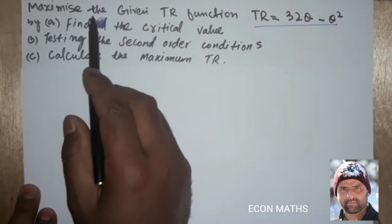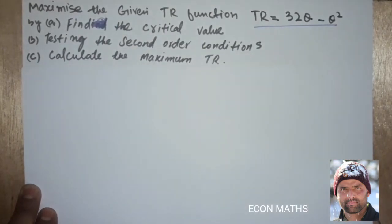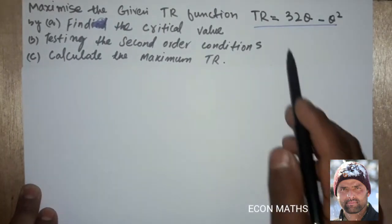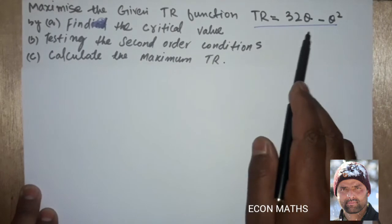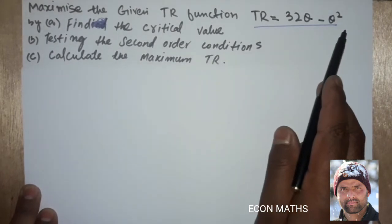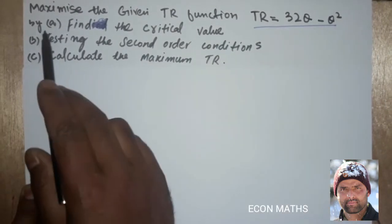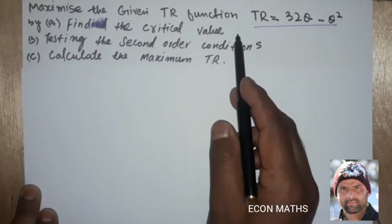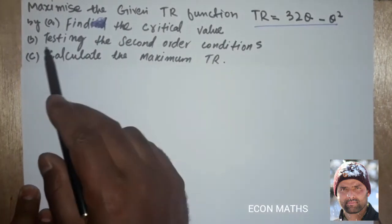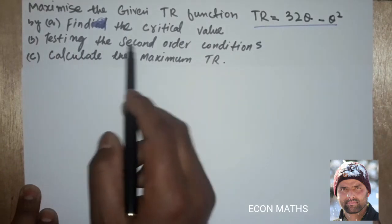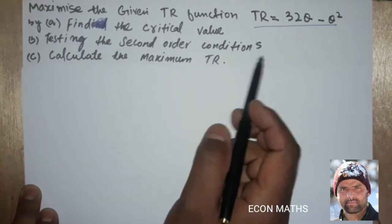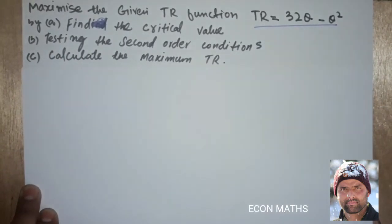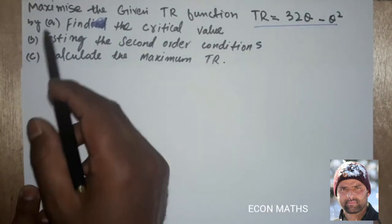The question is: maximize the given total revenue function, that is TR is equal to 32Q minus Q squared. The first part is to find the critical value. The second is to test the second order conditions, and the third is to calculate the maximum total revenue.